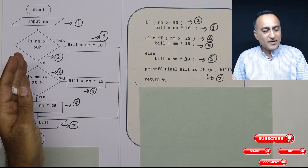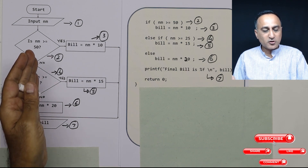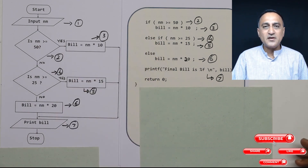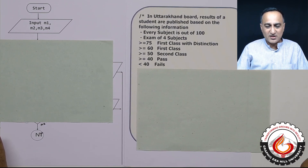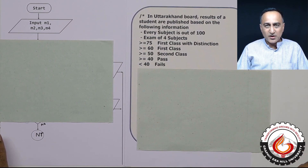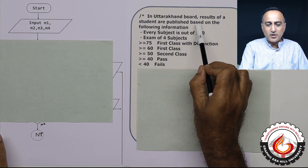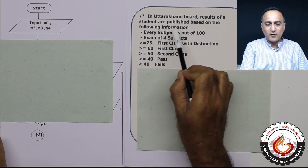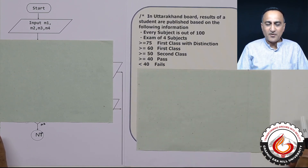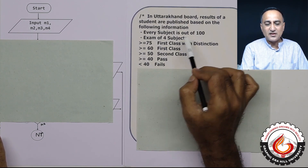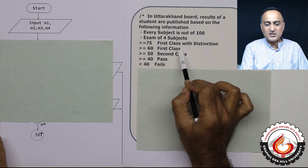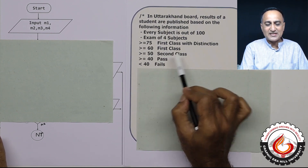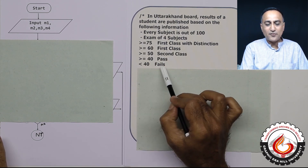So now we've seen how to take a logic developed via flowchart and transform it into code. The next problem is to find whether a person has passed, got second class, pass class, first class, or distinction based on marks out of four subjects. In the Uttarakhand board, results are published based on the following: if the aggregate of four subjects is greater than or equal to 75, we print first class with distinction; greater than or equal to 60, first class; greater than or equal to 50, second class; greater than or equal to 40, pass class; less than 40, we print fail.